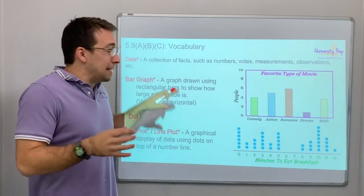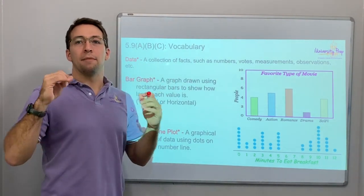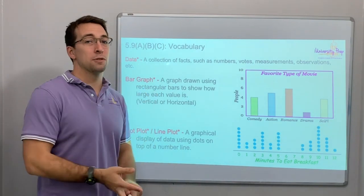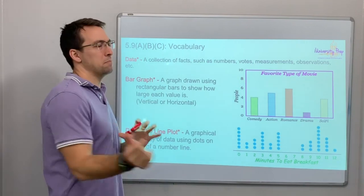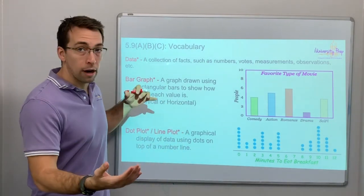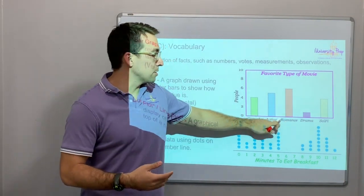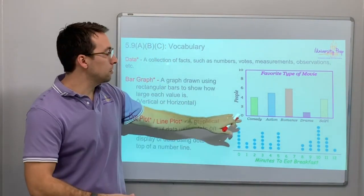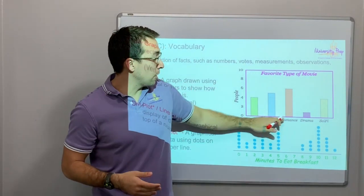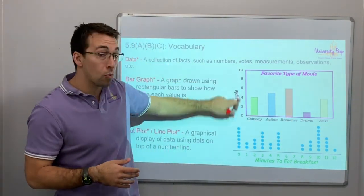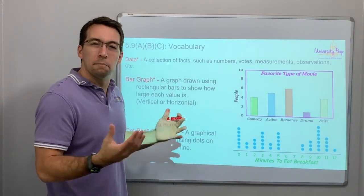What kind of vocab do you need? Data. Well, data is just a collection of facts or numbers — maybe votes or measurements, observations, etc. Any time you can quantify something and put it together in a table or a chart. So this is a bar graph. A bar graph is going to have titles of different values, and then two different variables — a variable on the x-axis and a variable on the y-axis. A bar graph shows that data in picture form.